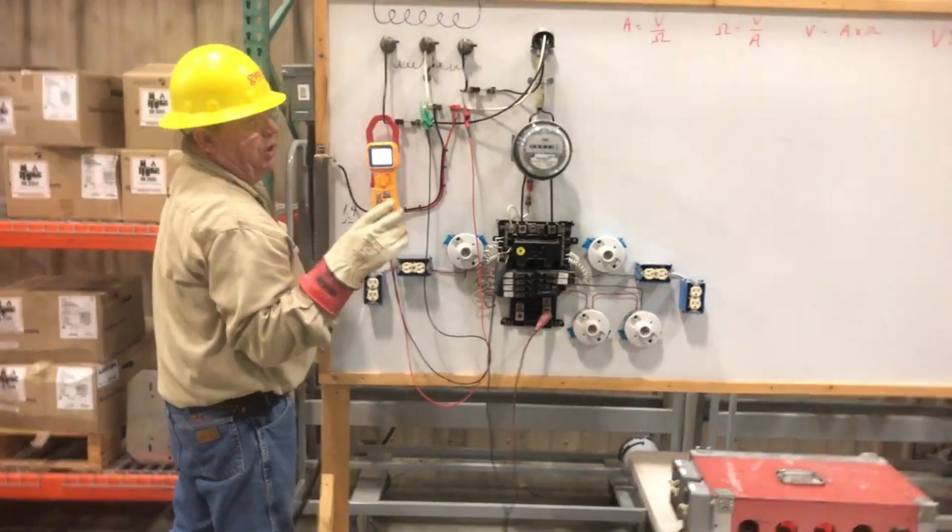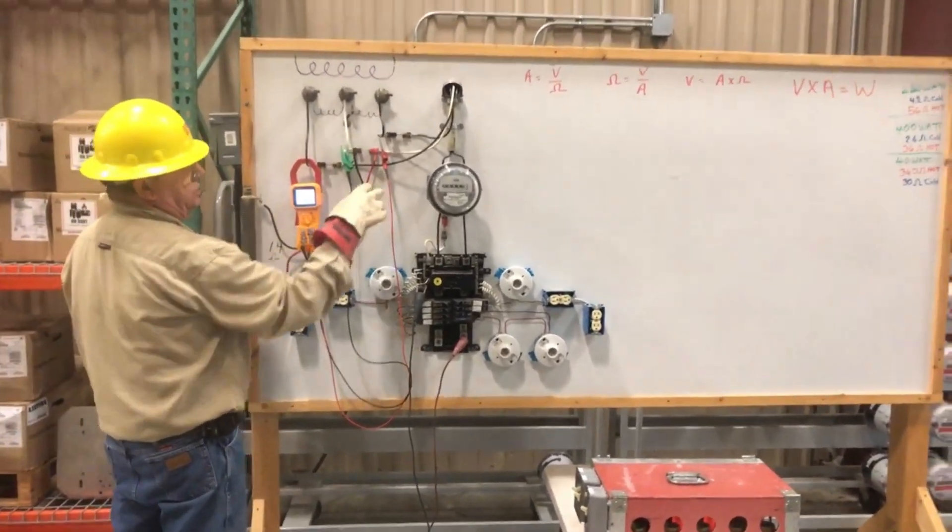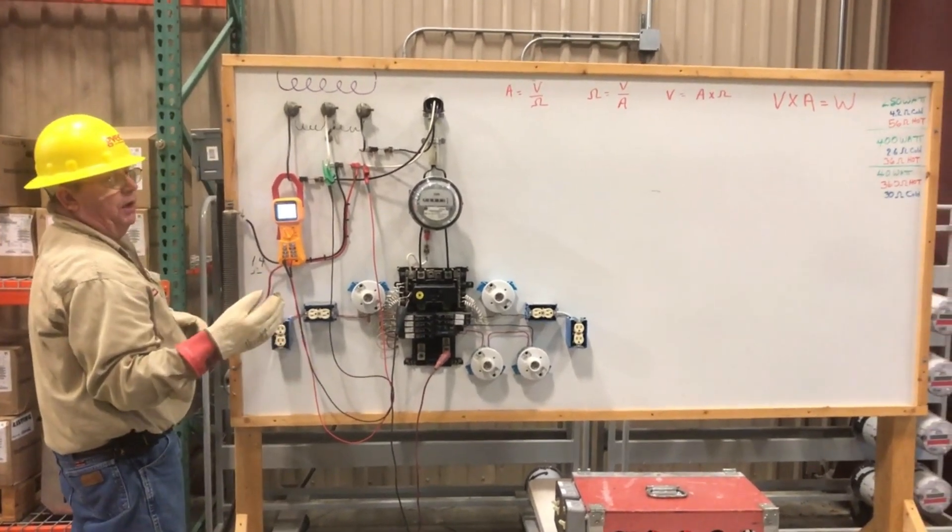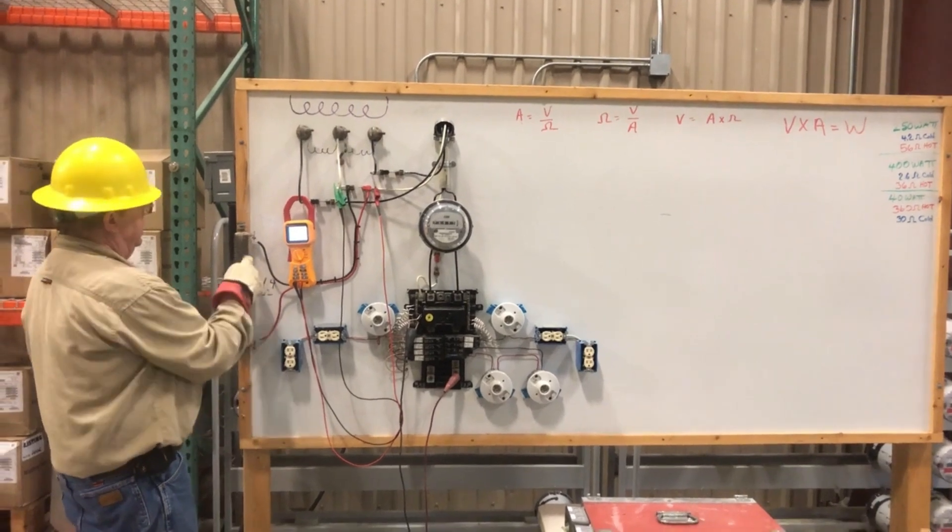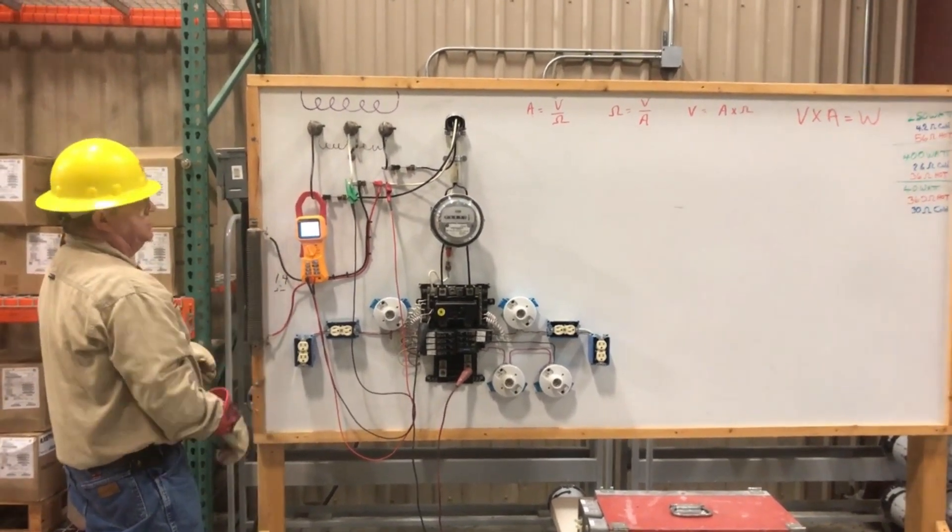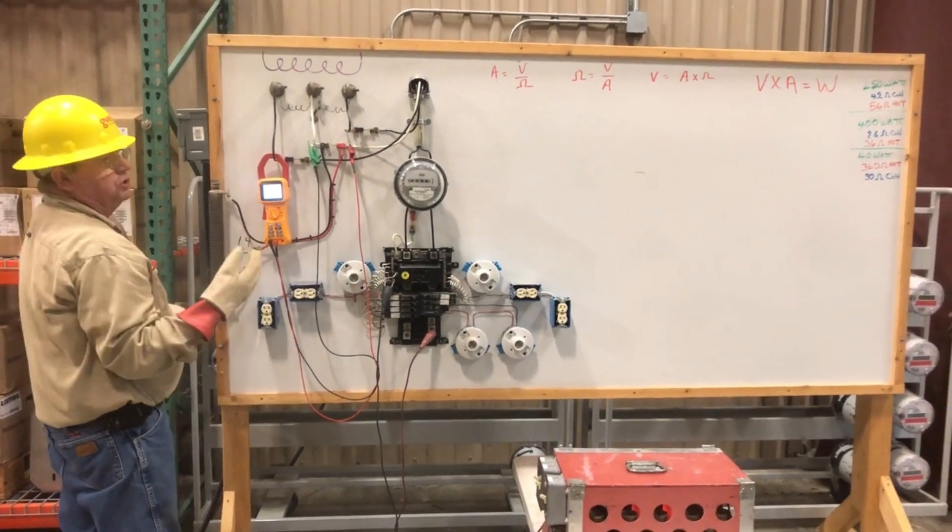So every time I'm looking for a bad connector, all I do is measure one side to the other. Any voltage above zero says that's a resistive lug. Here you can see the voltage from one end of this to the other costs 25 volts.